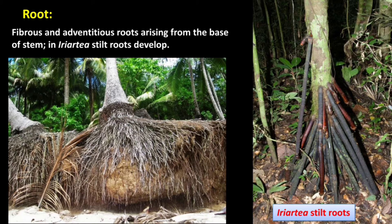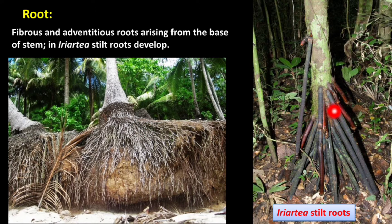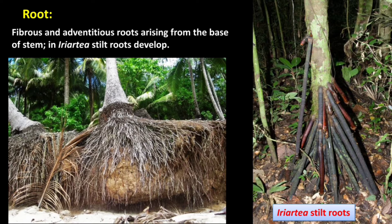Coming to roots: the roots of arborescent species are fibrous and adventitious, arising from the base of the stem. In Iriartea, stilt roots develop from the lower internodes of the stem and grow obliquely into the soil, giving extra mechanical strength to the plant.